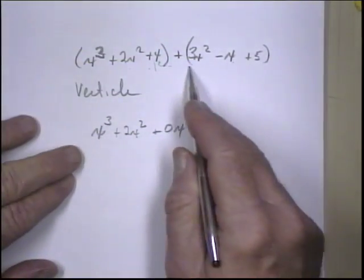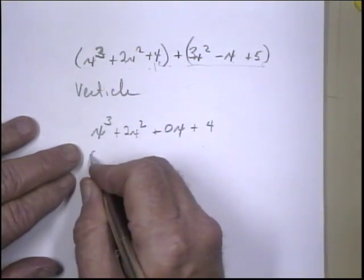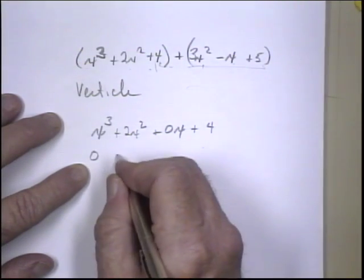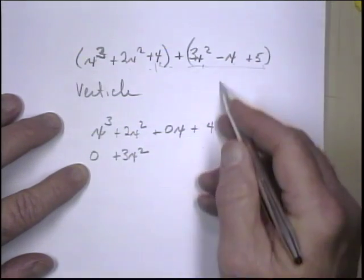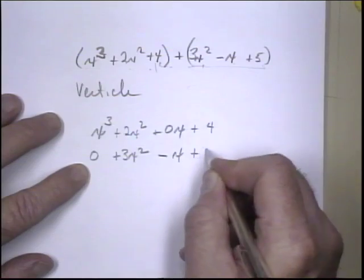and we're going to add this to it. So we have a 0, we don't have any x cubed in this group. We have a plus 3x squared, and we have a minus x, and a plus 5.